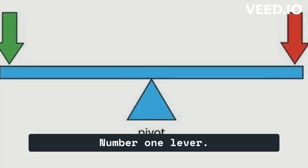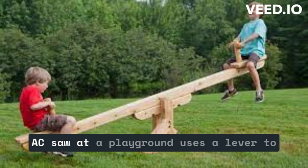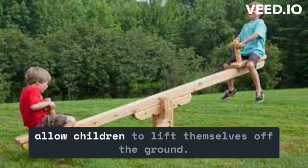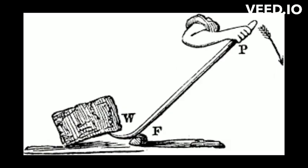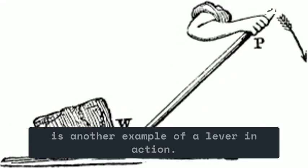Number 1: Lever. A seesaw at a playground uses a lever to allow children to lift themselves off the ground. Using a crowbar to lift a heavy object is another example of a lever in action.